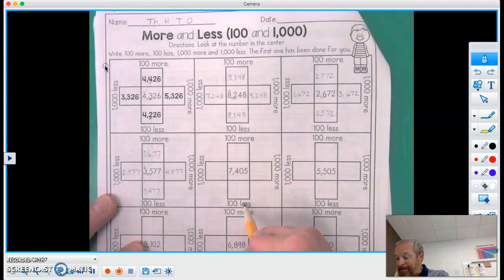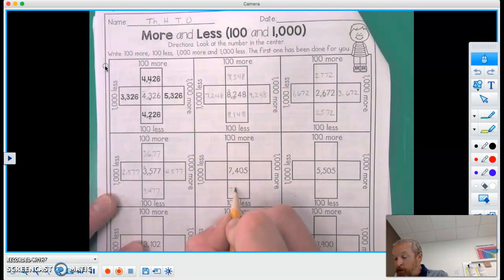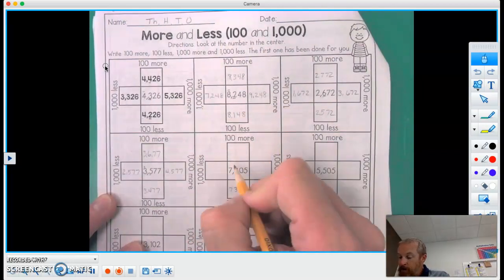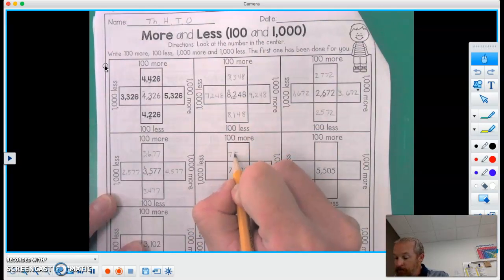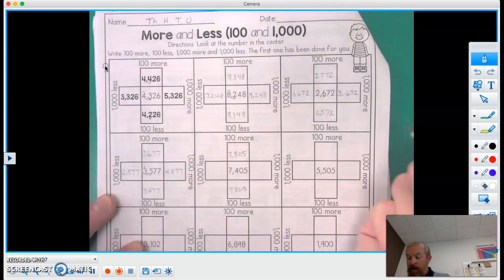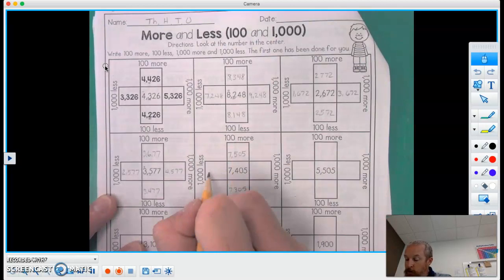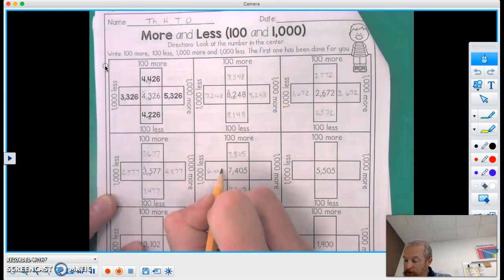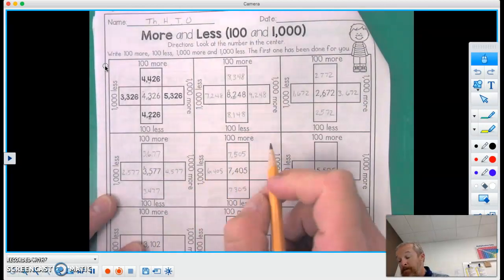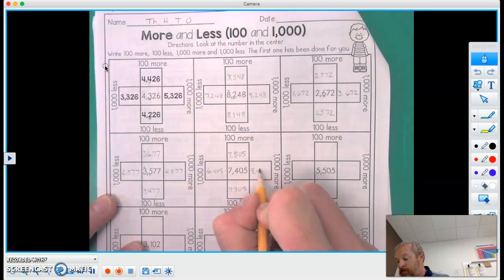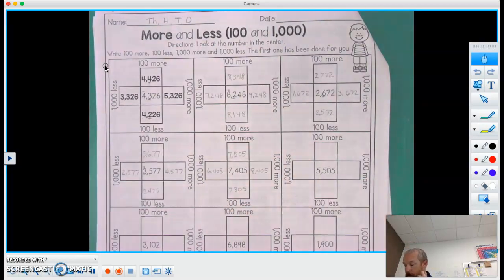Okay, 100 less than this one, 7,305. 100 more, 7,505. 1,000 less would be 6,405. 1,000 more would be 8,405.